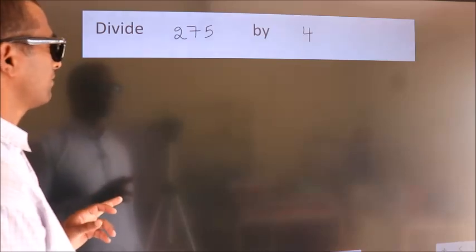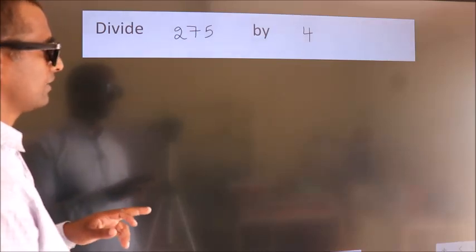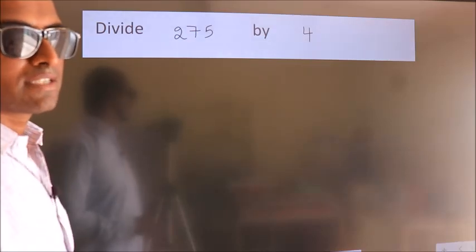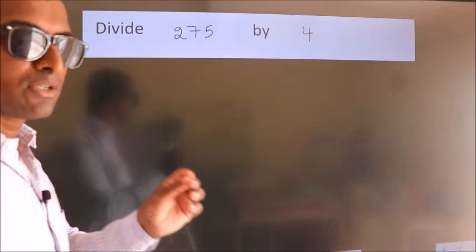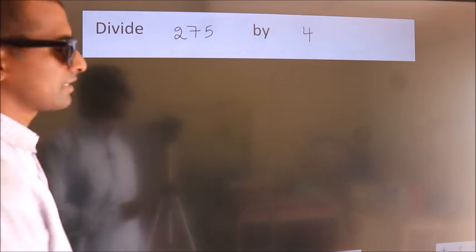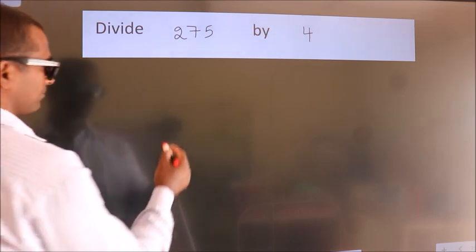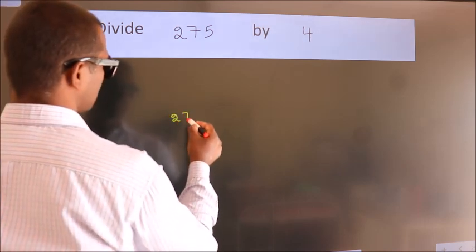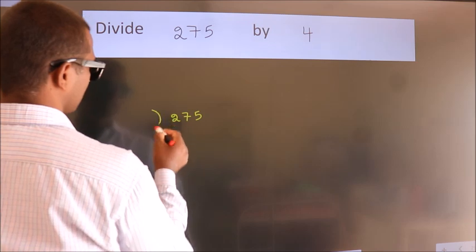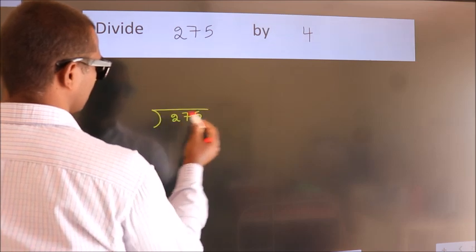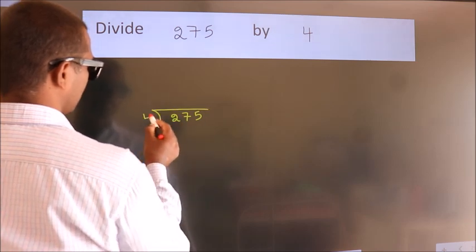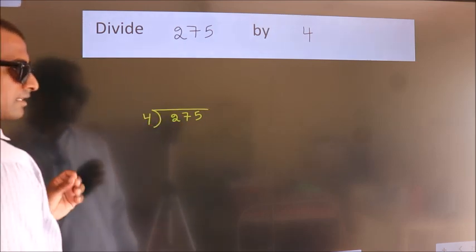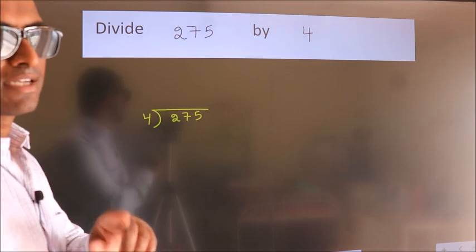Divide 275 by 4. To do this division, we should frame it in this way: 275 here, 4 here. This is your step 1.